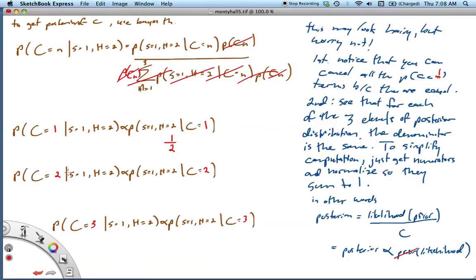Consider the next scenario where the car is behind the second door. Given that the car is behind the second door, what is the probability of my selecting the first door and the host opening the second door? Well, if the car is behind the second door, the host cannot open the second door. So this has zero probability.